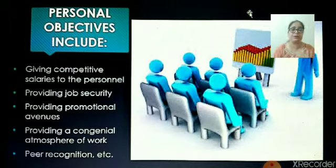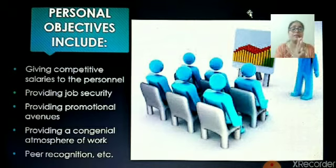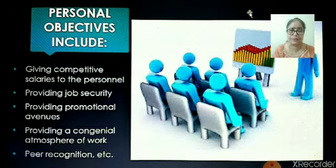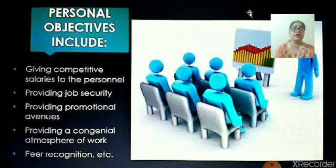Providing promotional avenues — promotions and hiking the salaries — these are things every person working in an organization wants, and if these things are satisfied, the person always gives their best to the organization. Then, providing a congenial atmosphere of work — congenial means a very healthy atmosphere where every person really loves and enjoys to work. Peer recognition: peers are the people working with us in an organization, and whenever a person is doing something good, they always want to be appreciated and their efforts recognized, so that they can give a better performance in the future. These all are the personal objectives which every person working in an organization really wants to achieve.